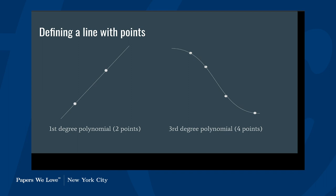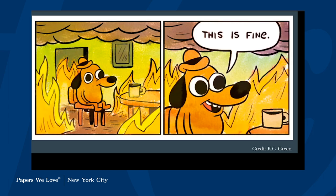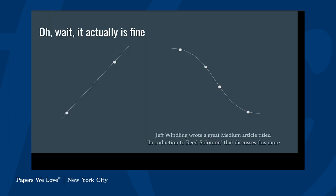If you add more points — what's called oversampling — you're still defining the same line. And that's fine, because you're able to draw the same line from a different set of points, as long as those points were still along the line. There's a blog on Medium called 'Introduction to Reed Solomon' by Jeff Wendling that discusses this in more depth, and there are other good resources out there for understanding how Reed-Solomon encoding works.